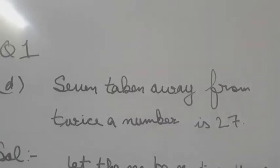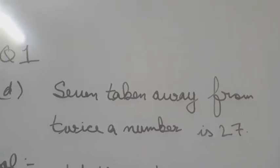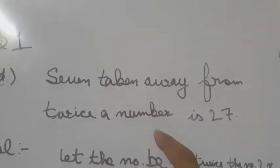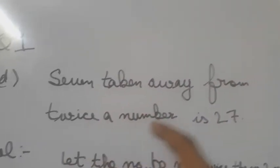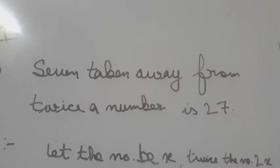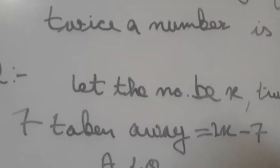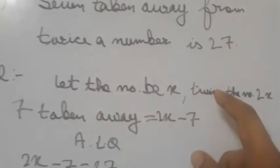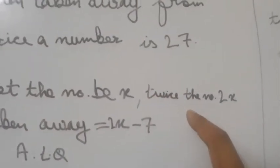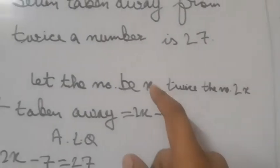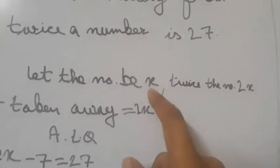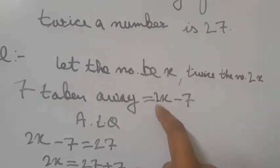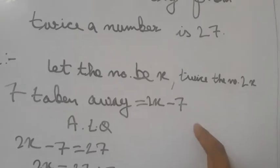The answer is 27. So from 'twice a number', twice means double — that is 2x. '7 taken away' means 7 subtract kiya, so the expression becomes 2x minus 7.